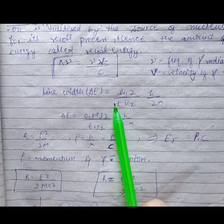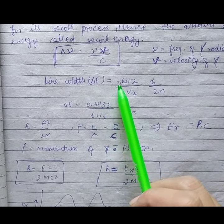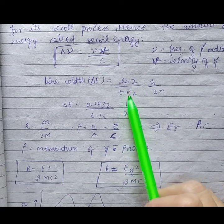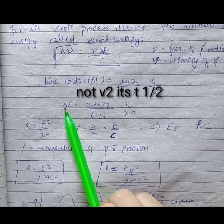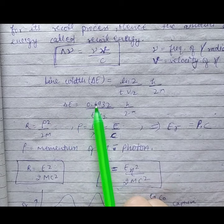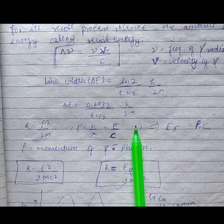If we want to calculate line width, how will we calculate? Line width has a simple formula. Line width equals ln 2 by T half into H by 2 pi. Simply we can say delta F equals 0.6932 by T half into H by 2 pi.